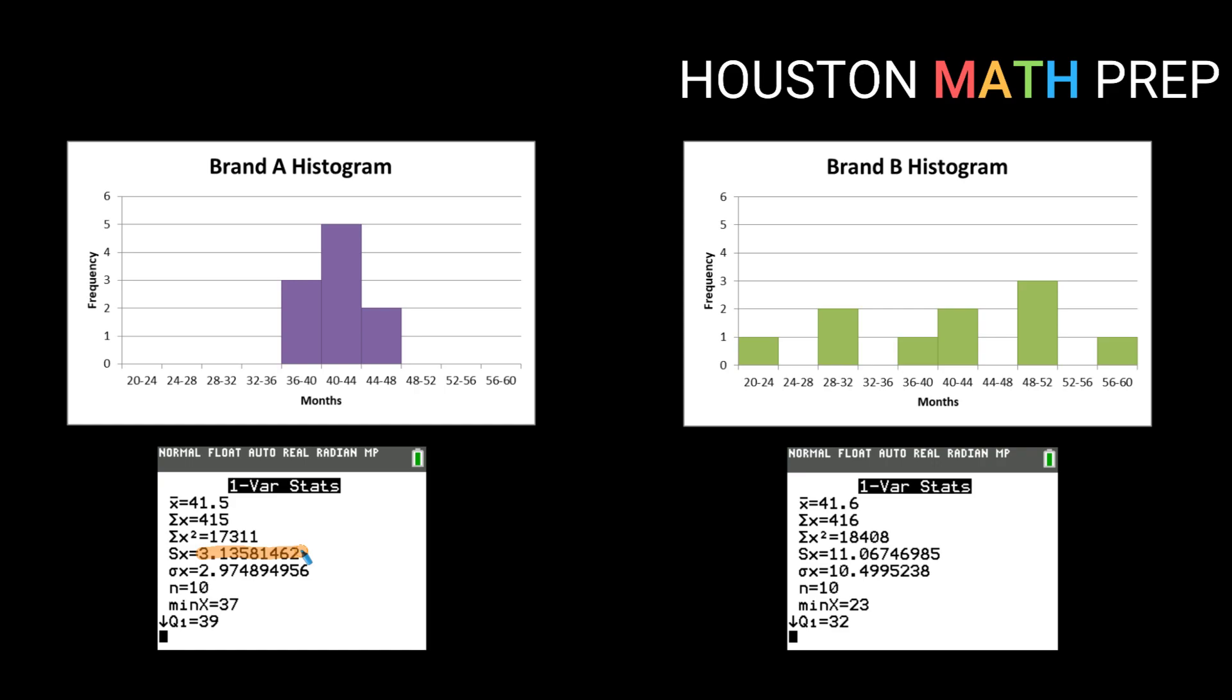When we compare that with brand B which has a standard deviation of just over 11 months that's much more spread out. So you have to think about okay brand B also has an average lifespan of about 41 and a half months give or take 11 months.